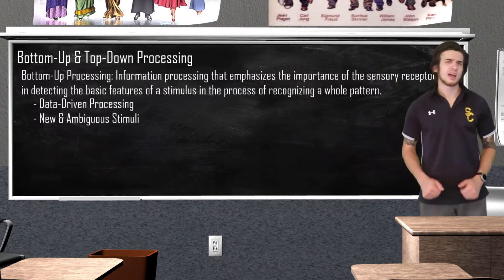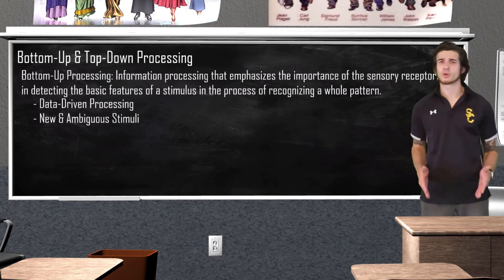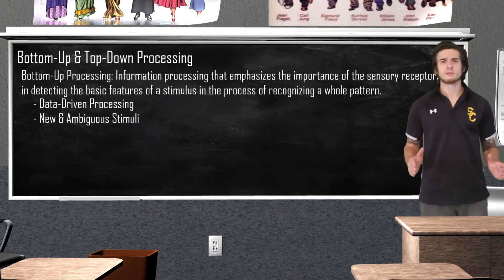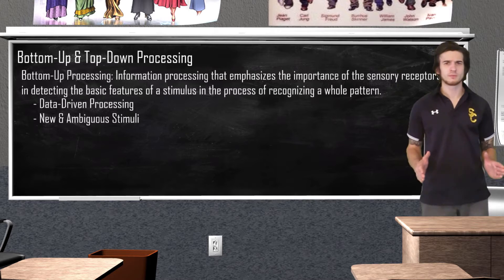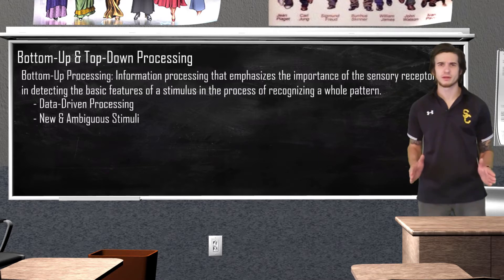To demonstrate how bottom-up processing works, I am going to flash an image on the screen. When I flash you this image, you first analyze the sensory input, such as the light patterns, shapes, or colors. This information is then relayed to the retina, where the process of transduction converts the light wave into a neural message that the brain can understand. These impulses pass into the brain where they trigger further responses along the visual pathways before reaching the occipital lobe for final processing. Your cognition is guided by basic sensory information coming in from the outside environment.